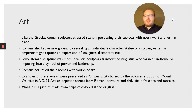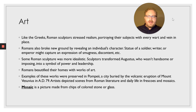Examples of these works of art were preserved in Pompeii, a city buried by the volcanic eruption of Mount Vesuvius in AD 79. We can see many works of art that people had in their homes from the remains covered by volcanic ash. These artists depicted scenes from Roman literature and daily life in frescoes and mosaics — a mosaic being a picture made from chips of colored stone or glass.